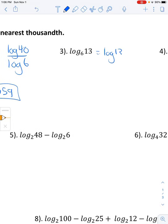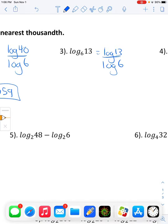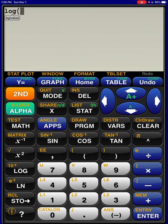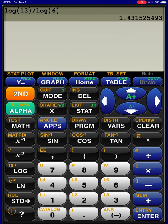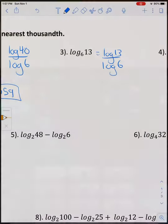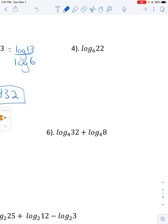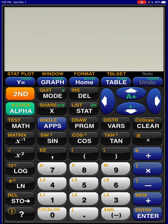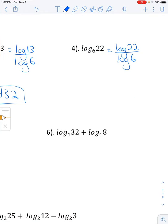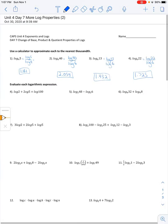Log of 13 over log of 6. 1.432. 22 over 6. 1.725. Okay. So there's your change of base property.